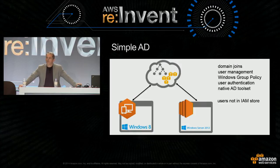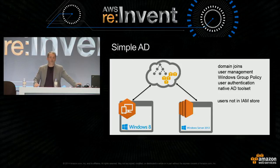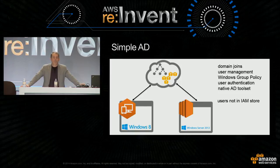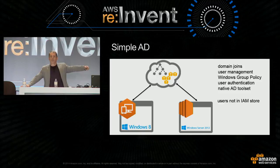The next one introduced on October 21st—I'm really excited about this—is Simple AD. It's built on Samba. It enables you to join Workspaces and EC2 instances. If you've got AWS applications that can consume identity services from Windows AD, here you go. You can manage users across these platforms, apply Windows group policy to them, authenticate users, and use native Active Directory toolsets like ADUC—Active Directory Users and Computers. The thing to recognize is that users within Simple AD are not within the IAM store—they are not known users within IAM, although you can federate access into IAM for these particular users.